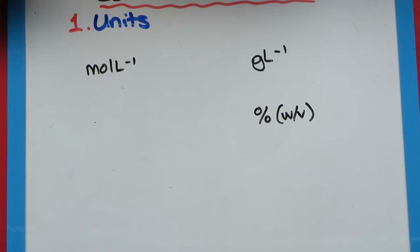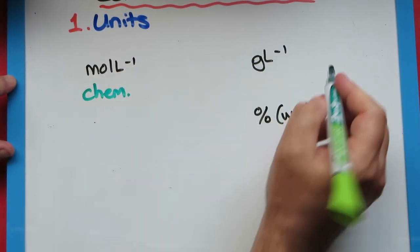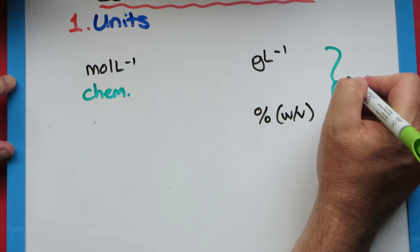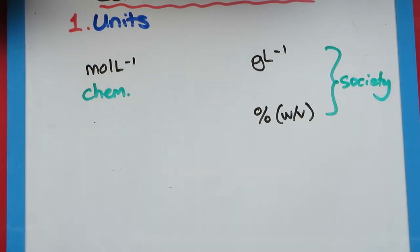What we find is that these units here are usually only in chemistry, and these two here are used by society. So we need to know how to put the two together, because we need to be able to communicate our chemistry in terms that our audience will understand. Most of our audience are not chemists; they are members of society. So we need to be able to convert them into each other.